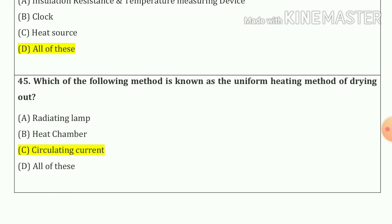And the last one — question number forty-five: Which of the following methods is known as the uniform heating method of drying out? So our answer is circulating current — option C.